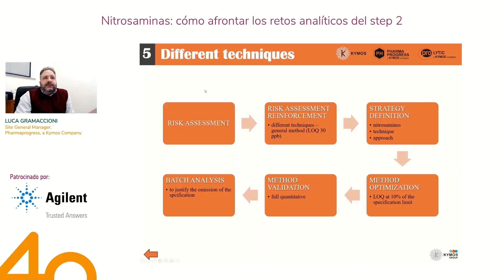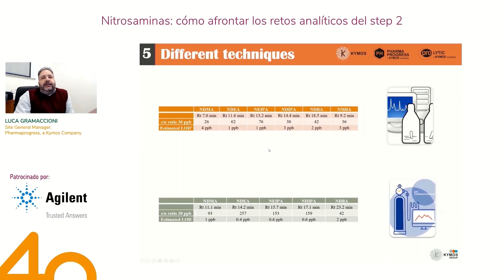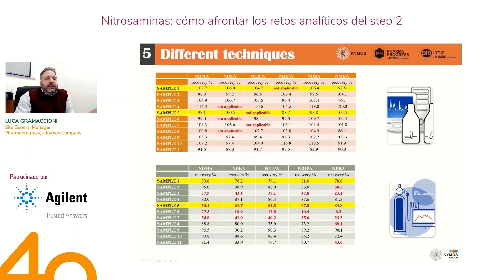This first case study shows the advantages of having different techniques available. A client arrived at our CRO with the risk assessment completed, and we decided with them to reinforce the risk assessment by applying the general methods we have developed in the lab without any changes: a liquid chromatographic method and a GC-MS chromatographic method, applied as-is. They asked us to apply them to 11 different samples in order to have a general screening as a first step.